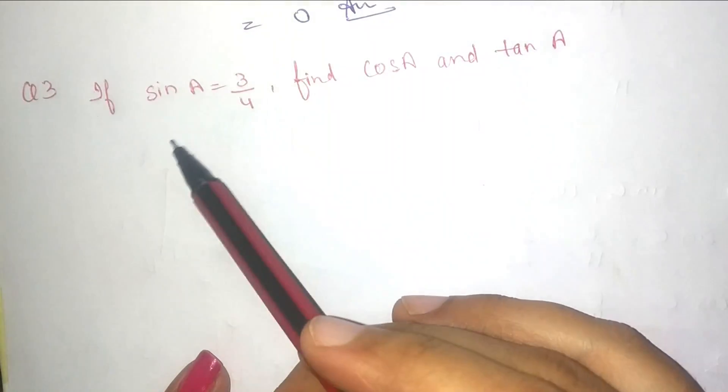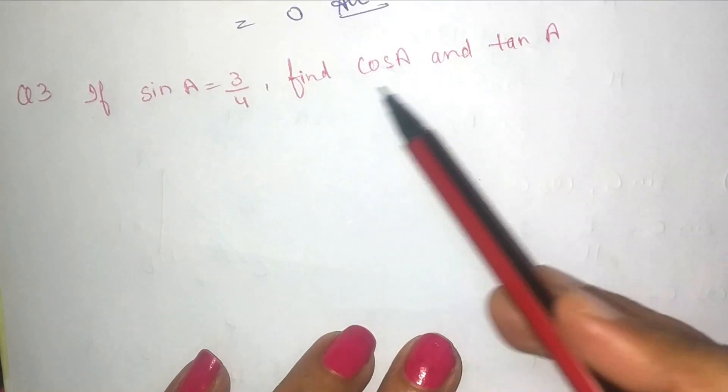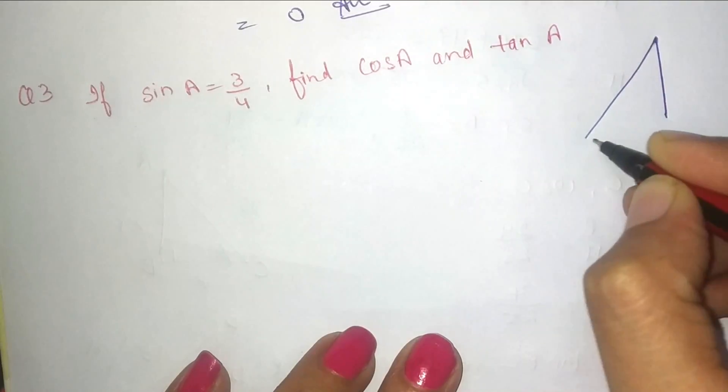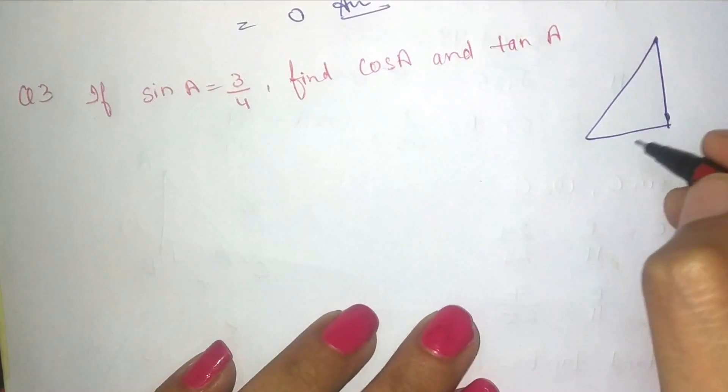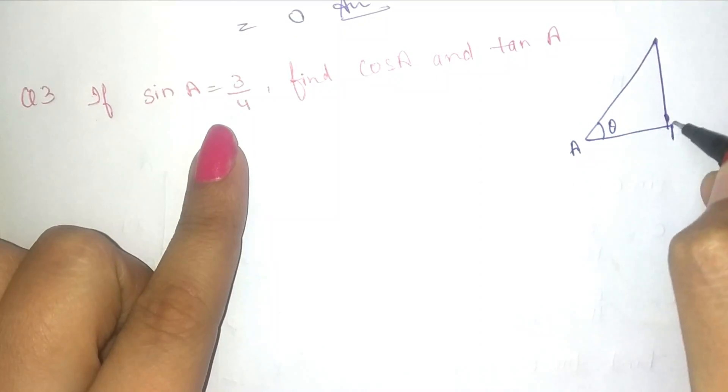Let's start with question number 3 of exercise 8.1. If sin A is equal to 3 by 4, find cos A and tan A. First of all, draw the triangle. Sin A, it means theta is here A, it will be B and C.